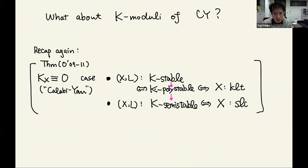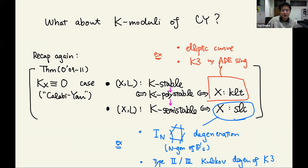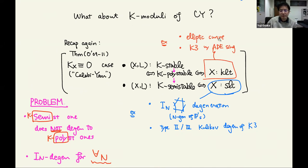In the Calabi-Yau case, we have a very simple criterion of stability. The K-Einstein existence, or the existence of a Ricci-flat Kähler metric, is due to the Yau-Calabi theorem. We know that X smooth is K-stable. Polystability is equivalent to the KLT condition, and semi-stability is SLC. The singularity control is clear. The stable ones include elliptic curves — smooth ones or with ADE singularities. In the one-dimensional case, an elliptic curve can degenerate to an N-gon of P^1s — those are the SALC Calabi-Yau examples. In two dimensions, type II or type III degenerations, if you have a polarization on them.